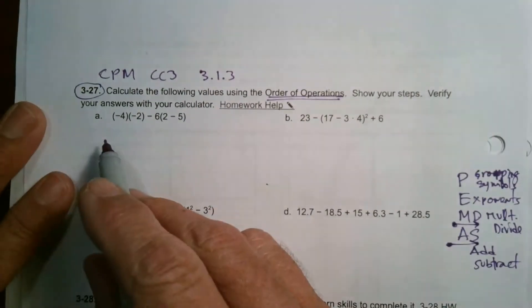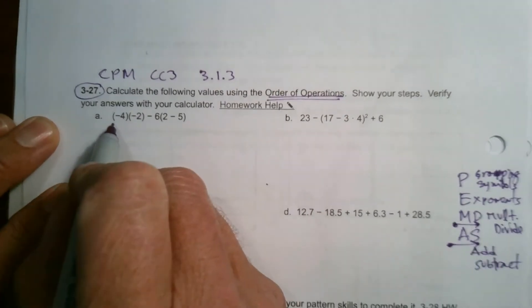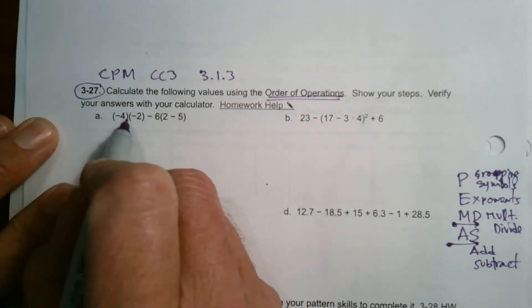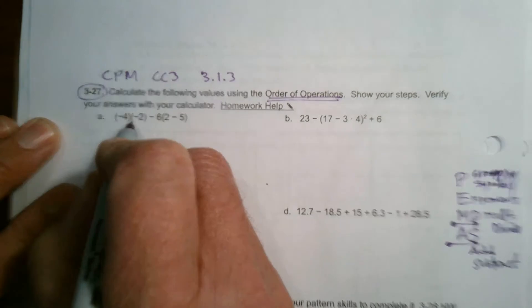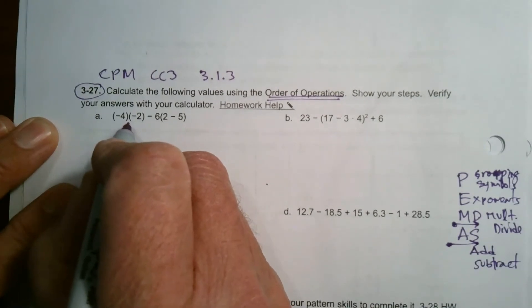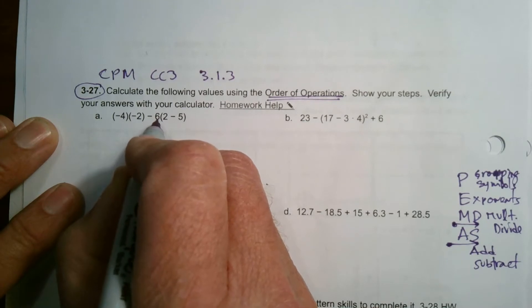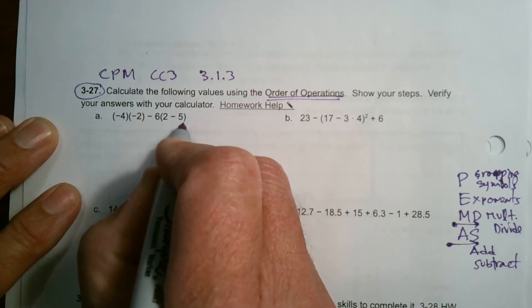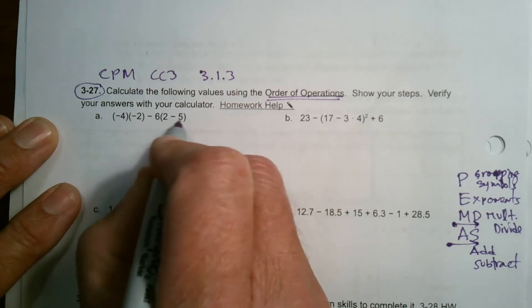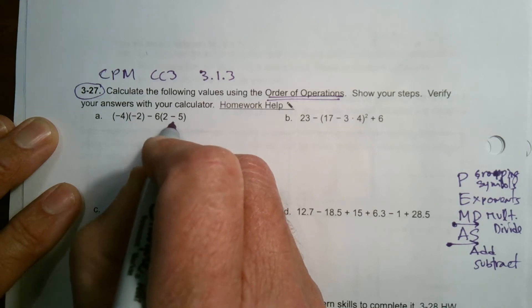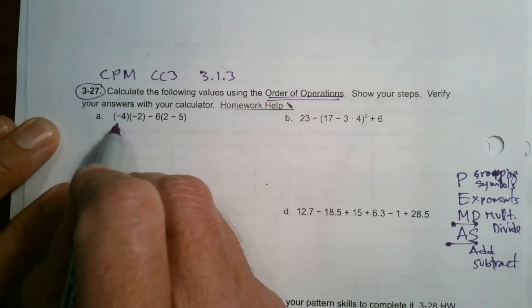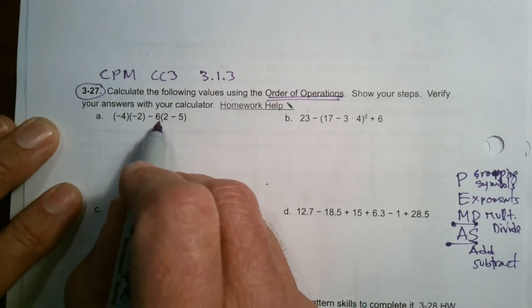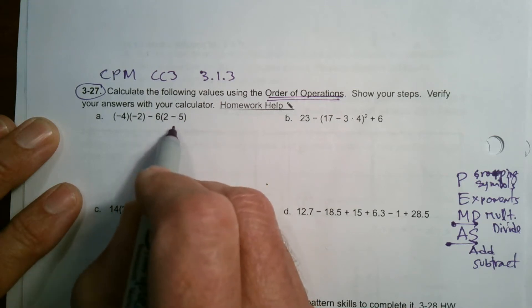So A. First thing is I can tell you what operations we have here. When you see parentheses with single numbers, that's a negative four and a negative two inside the parentheses. Those parentheses together just mean multiply. So I have multiply, I have subtraction. And then when you have a number right next to a set of parentheses, it also means multiply. Inside this set of parentheses are two numbers with a subtraction between. So I need to do this first, because when there's an operation, when there's something to do inside the parentheses, that's when it comes first. Let's start there.